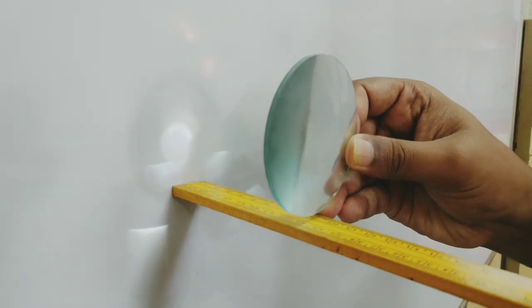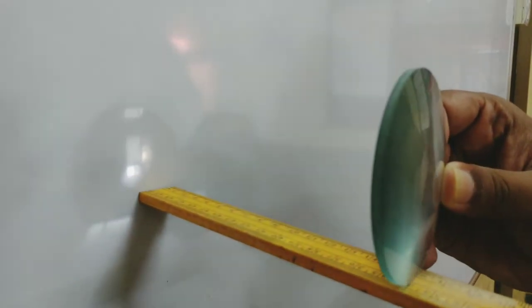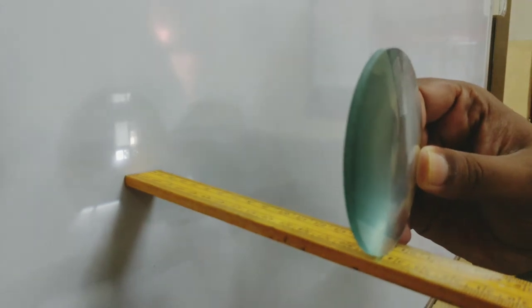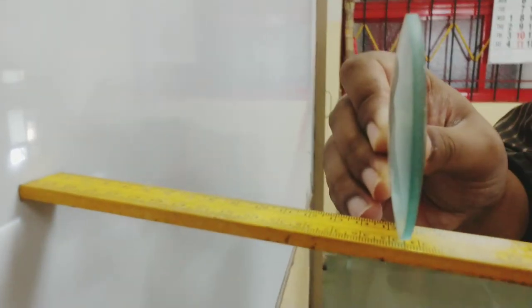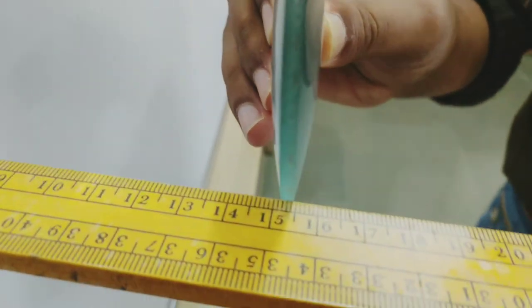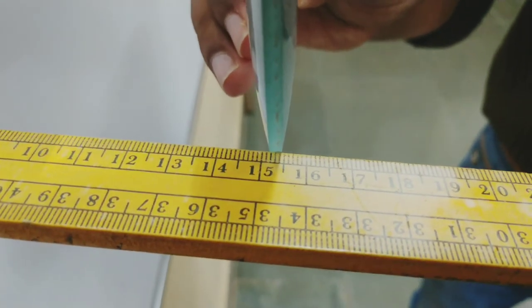That means there's only one point where I can get a clear image. So once I get the clear image, I stop over there and I note down the reading. The reading over here is approximately 15.5 centimeters, so the rough focal length of this convex lens will be 15.5 centimeters.